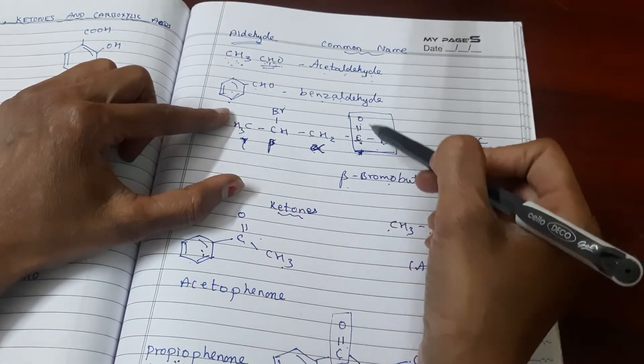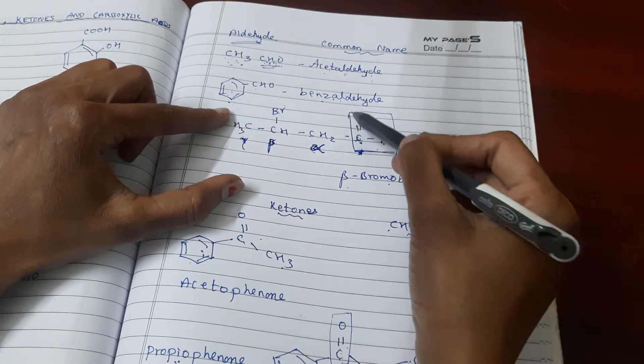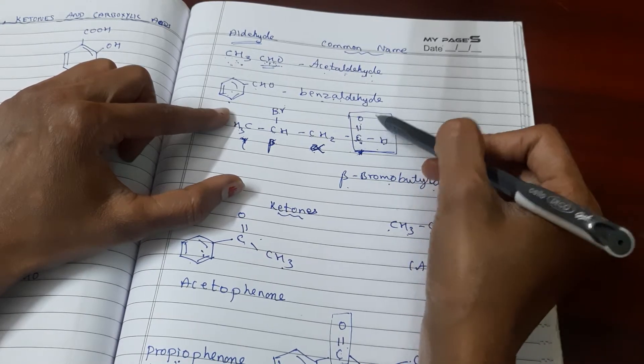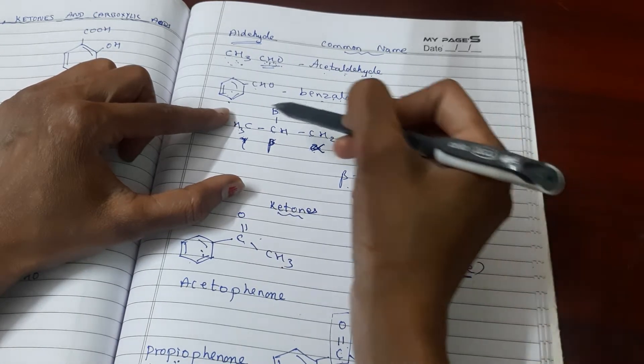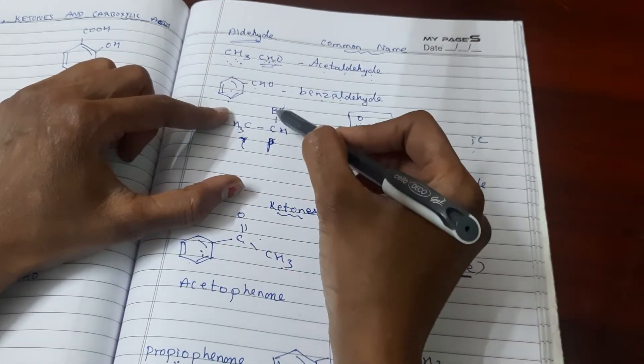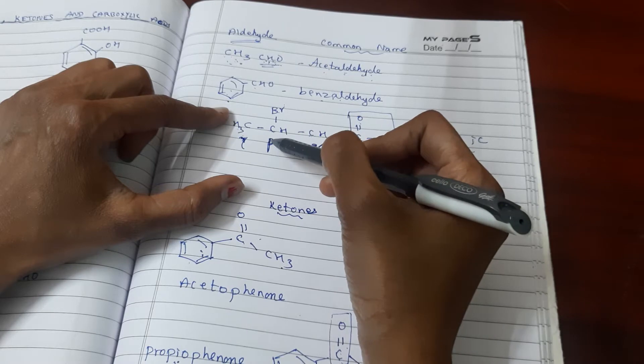Now we will talk about a chain. The chain has C double bond O with H - the aldehyde group. In our functional group, we name carbons as alpha carbon, beta, gamma, delta. If a substituent is on this branch, it's at the beta carbon. This would be beta-bromo.